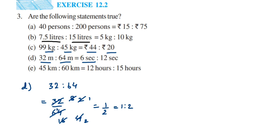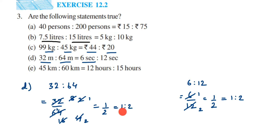The second ratio is 6 seconds is to 12 seconds — so 6 is to 12. Converting to fraction: 6 by 12. Cancelling: 6 ones are 6, 6 twos are 12 — giving 1 by 2, which is 1 is to 2. We got 1 is to 2 and 1 is to 2 — they are equal, so the fourth statement is TRUE.